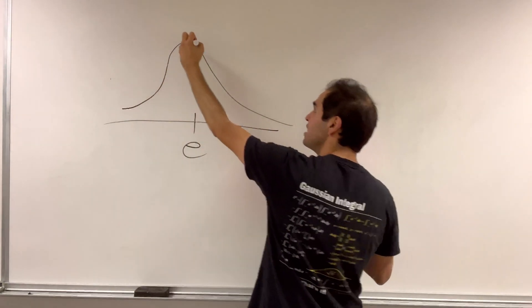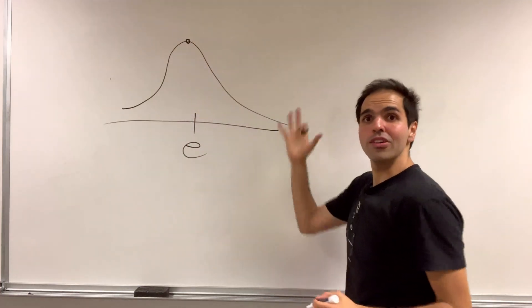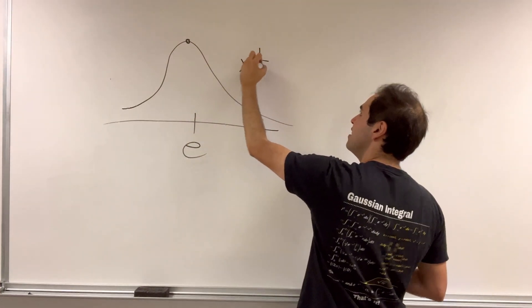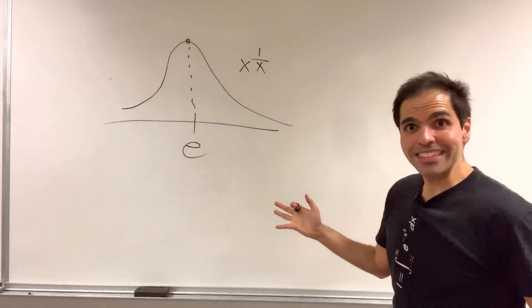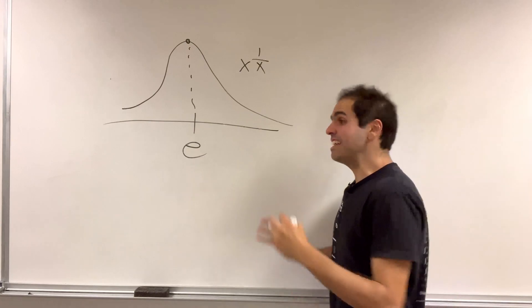It's increasing and it's decreasing. In particular, the function x to the 1 over x attains its maximum at e. Which is good, because 33 and 22 are definitely bigger than e.